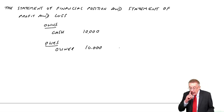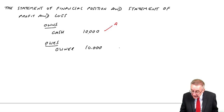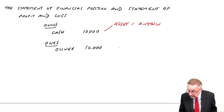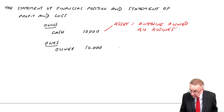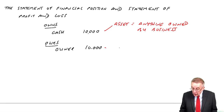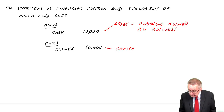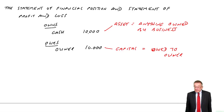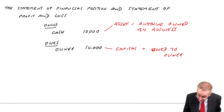The business owns $10,000 — we call that an asset. An asset is anything owned by the business. So we have assets of $10,000. At the same time, we owe the owner $10,000. Money owed to the owner we call capital. If money's owed to the owner, it's capital. So that's transaction A: assets of $10,000, capital of $10,000.